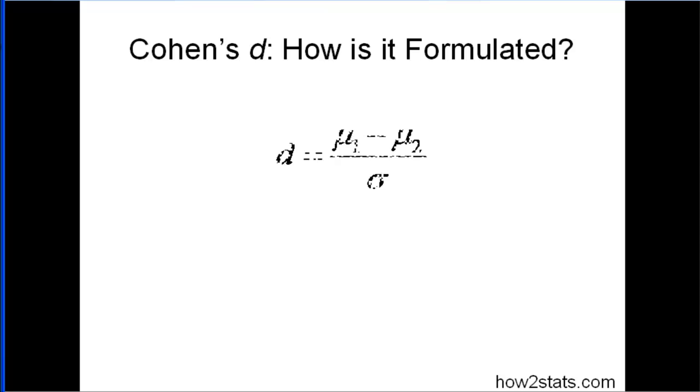Cohen's D, how is it formulated? This is the basic formula of what you might call, and some people call, all D indexes, even though only one of them is called D. And that's Cohen's D. And it's basically the difference between two means divided by some estimate of the standard deviation.